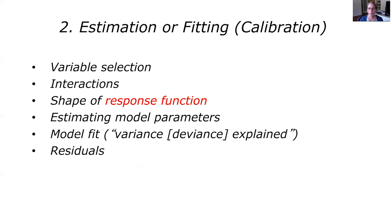The second step in statistical modeling is model estimation or fitting. This involves variable selection, characterizing and testing the significance of interactions between predictors, examining the shape of the estimated response curve in terms of ecological sensibility, and evaluating model fit through means such as variance explained or deviance explained. In the case of models with strong assumptions, we also examine the distribution of residuals with respect to model assumptions, such as independence.